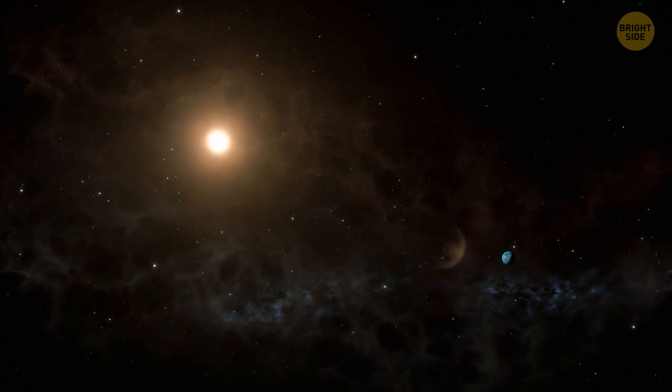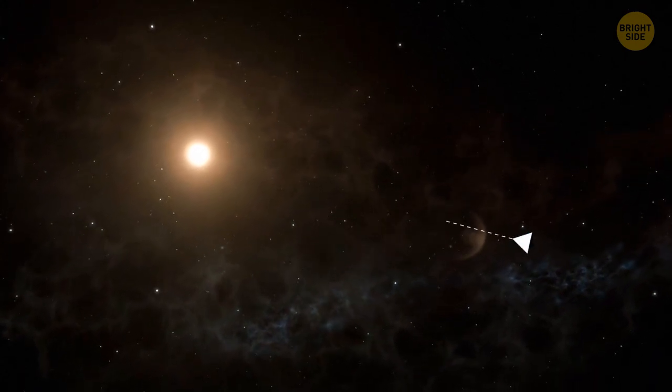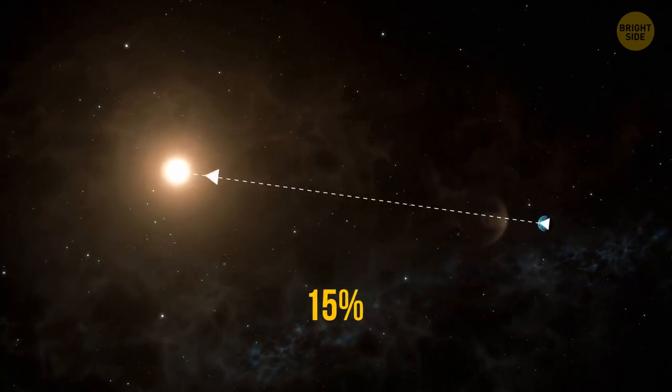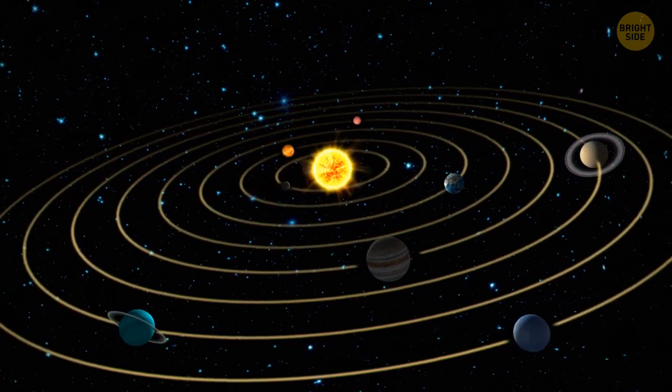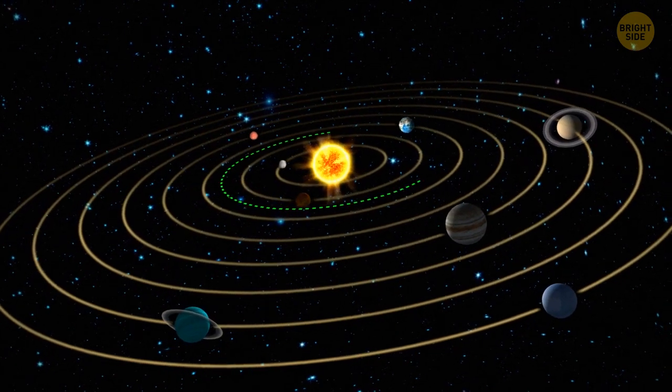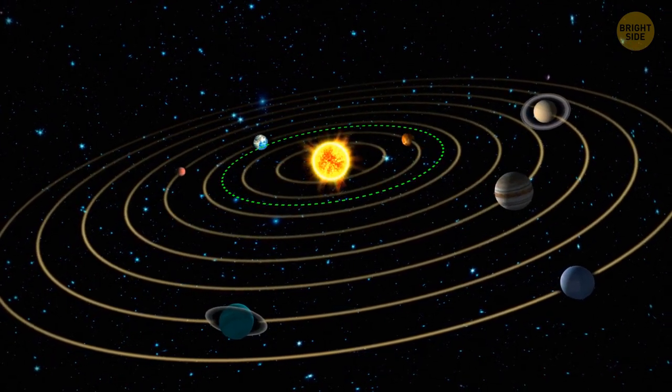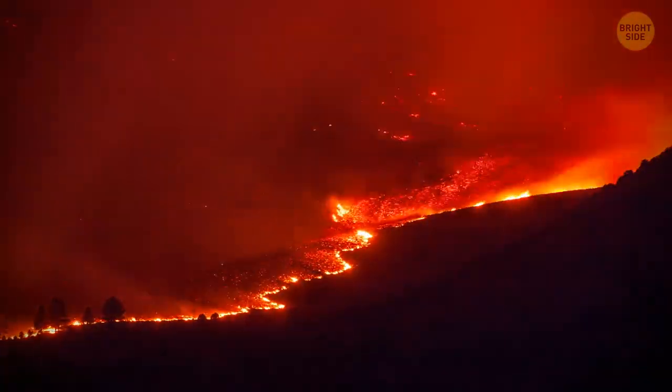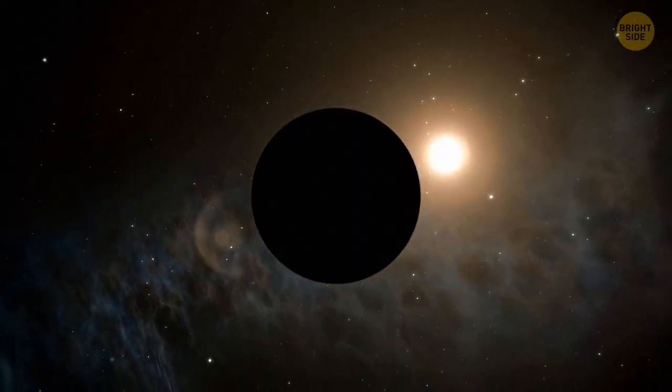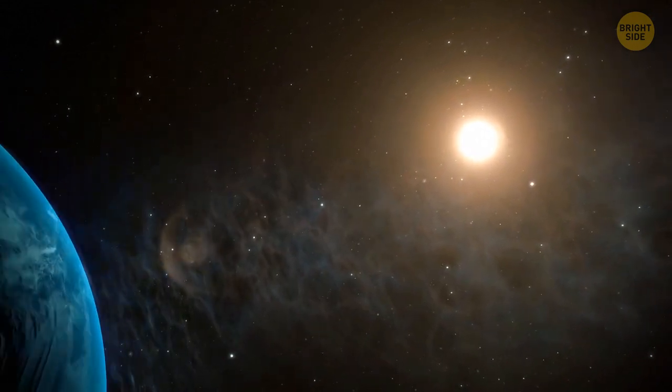The next thing we know about Kepler-22b is that it's about 15% closer to its star than we are to the Sun. If Kepler-22b existed in our solar system, it would be located somewhere between Earth and Venus. Does that mean we're all going to burn? No, silly. As I mentioned before, the star Kepler-22 is pretty cold.